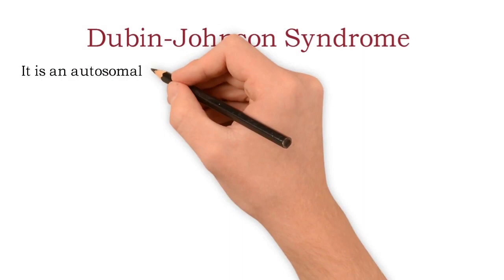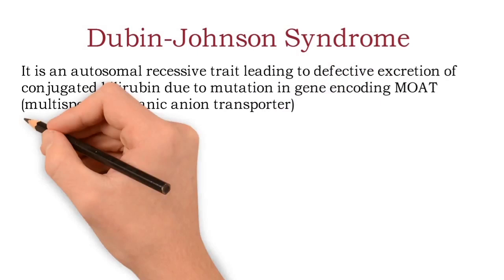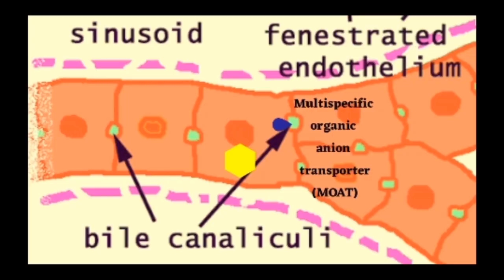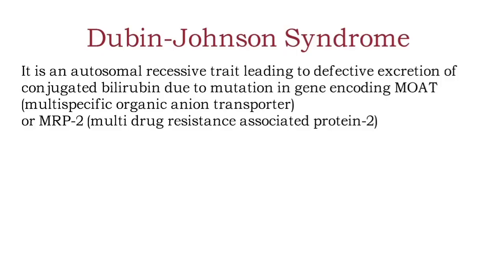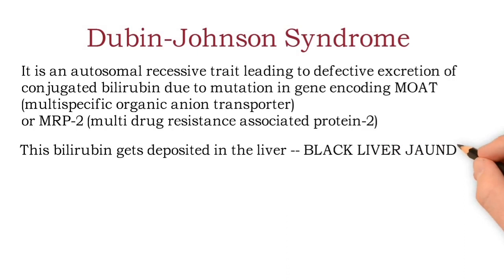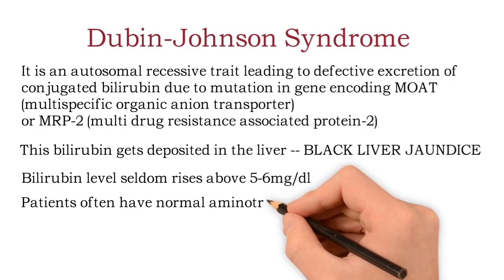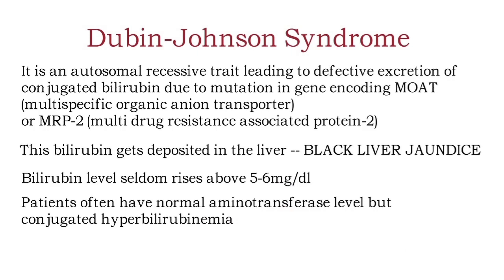Next is Dubin-Johnson syndrome, an autosomal recessive trait leading to a defect in excretion of conjugated bilirubin due to mutation of the MOAT gene (multi-specific organic anion transporter) or MRP2 (multi-drug resistance associated protein 2). This ATP-dependent organic anion transporter in the bile canaliculi is defective, so bilirubin cannot be transported to bile canaliculi and gets deposited in the liver — a condition called black liver jaundice. Serum bilirubin seldom rises above 5 to 6 mg per deciliter. The patient often has normal aminotransferase levels but has conjugated hyperbilirubinemia. It is a benign condition requiring no treatment.